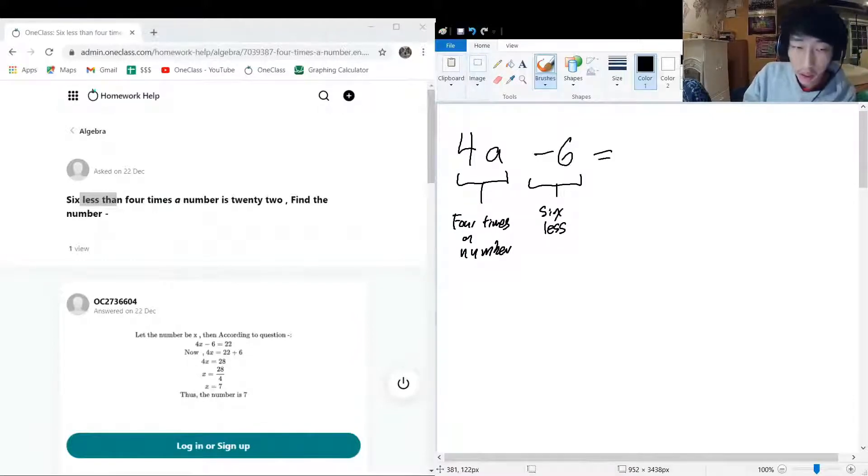Four times a number is equal to 22. I don't know about you, but I'm feeling 22. So we got to find the number. So let's do some quick algebra here. So let's add six to both sides.